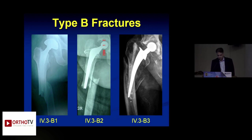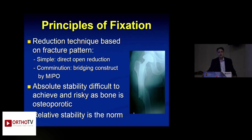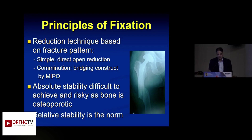For B1 fractures, where the stem is likely well fixed, you proceed with fixing the fracture. Biological fixation is preferred, minimizing surgical trauma, with fixation strong enough to allow early weight bearing. General fracture principles apply: simple fracture patterns require direct open reduction; more comminuted patterns require a bridging construct with MIPO techniques. Absolute stability is very difficult to achieve even with simple patterns, so relative stability is generally the norm.